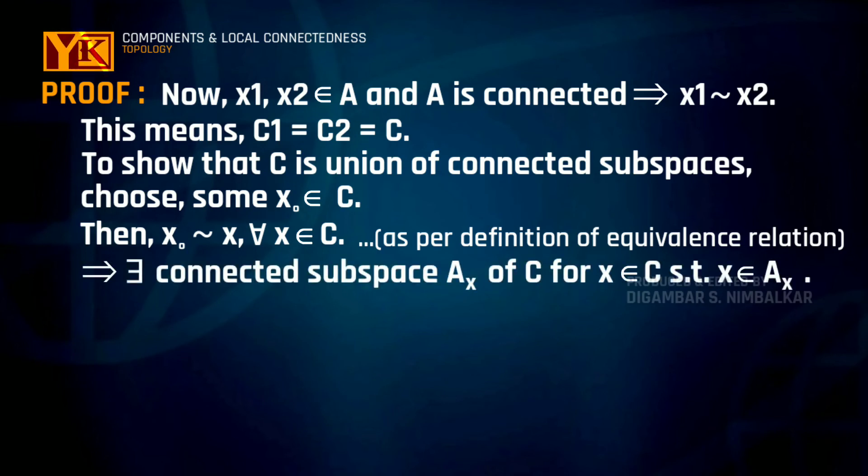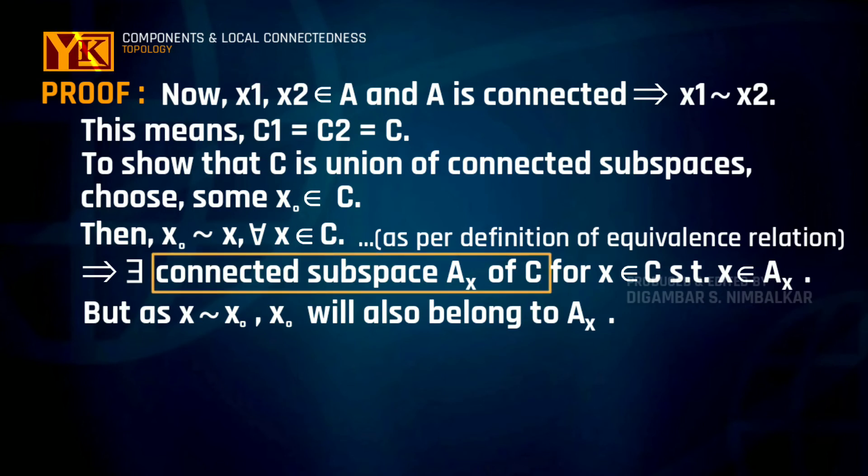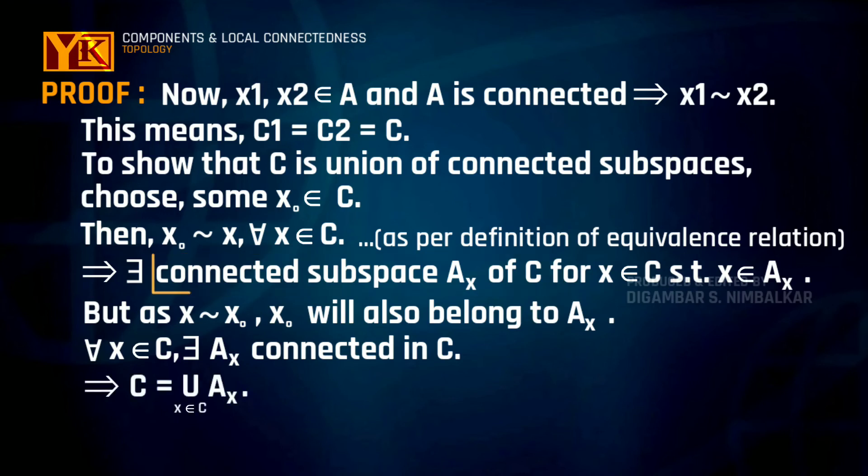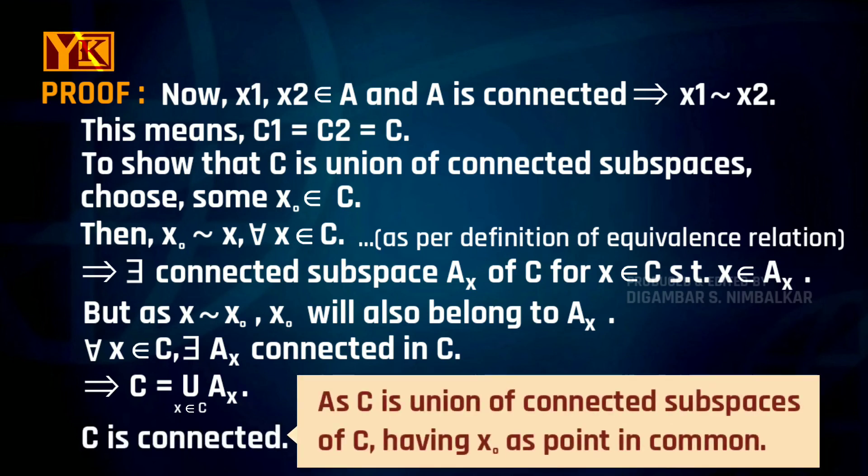So, there will exist connected subspace Ax of c which contains x and as x is equivalent to x0 Ax will contain x0 as well and as Ax is subspace of c for particular x for all x in c there will exist many such Ax which are disjoint and connected subspaces of c and therefore c is equal to union of Ax for x belonging to c and all these Ax are connected. So, c has to be connected since it is the union of connected subspaces and have common point x0 in common.